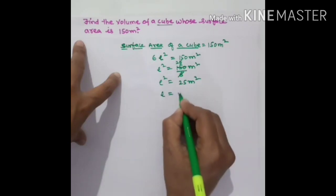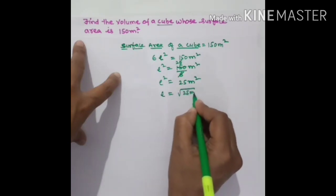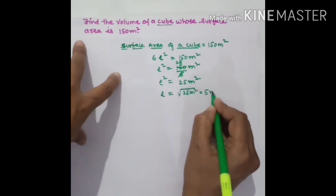L will equal the square root of 25 meter square, which equals 5 meter.